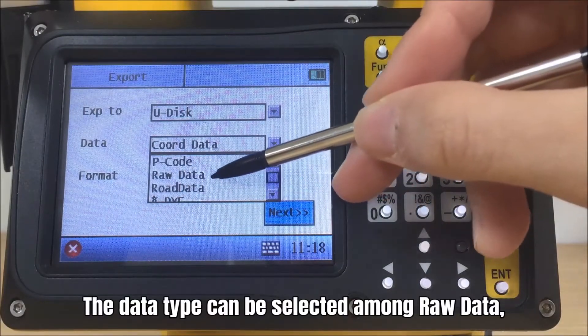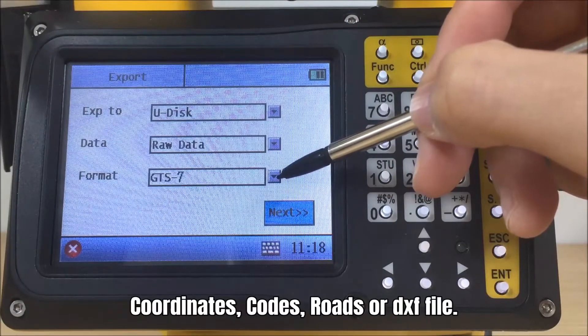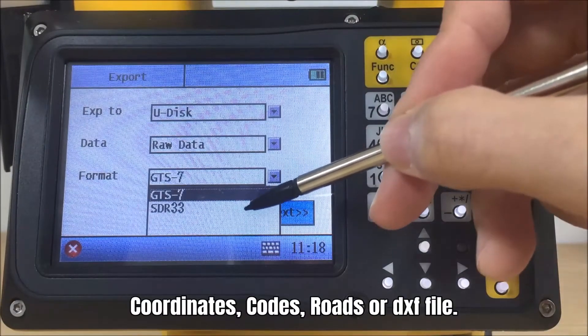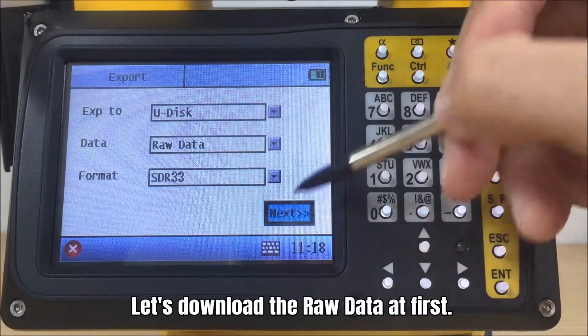The data type can be selected among raw data, coordinates, codes, roads, or DXF file. Let's download the raw data at first.